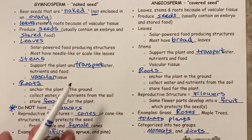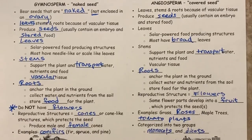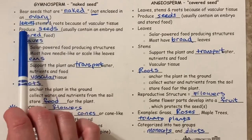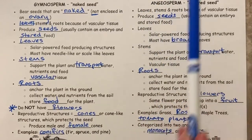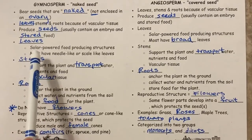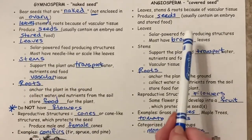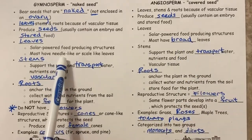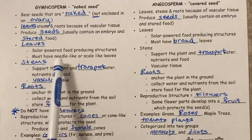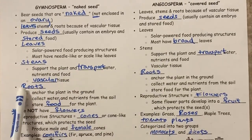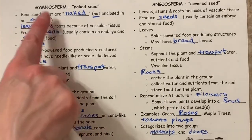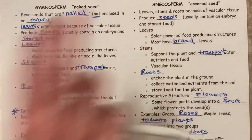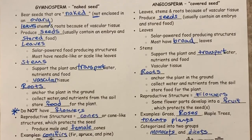If we compare these two parts of the foldable, you can see that many features are very similar. They both produce seeds, and they both have leaves, stems, and roots. Their leaves undergo photosynthesis, except angiosperms have broad leaves while gymnosperms have needles. The stems and roots do the exact same thing. The reproductive structures are cones for gymnosperms and flowers for angiosperms.